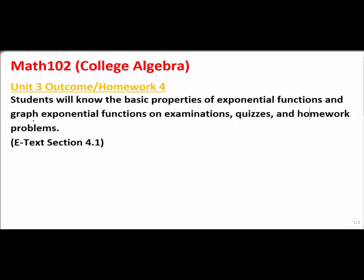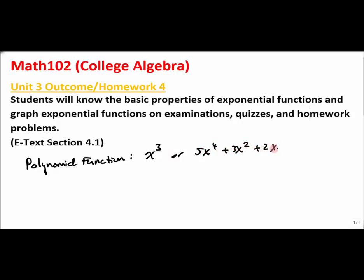With a polynomial function, the base was our variable. We'd have something like x cubed, or 5x to the 4th plus 3x squared plus 2x plus 1. Each of these bases has the variable where the exponent is the constant. For an exponential function, it's just the opposite — the base is a constant and the exponent is the variable.